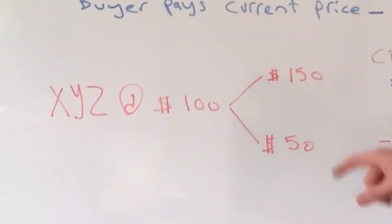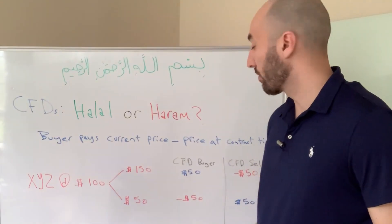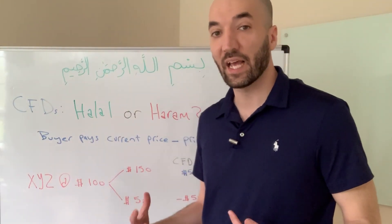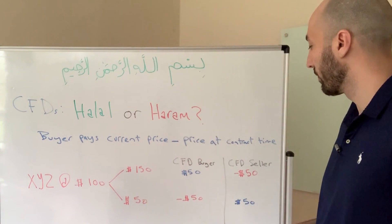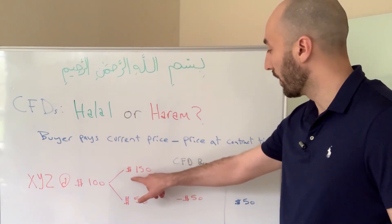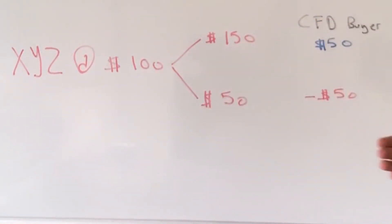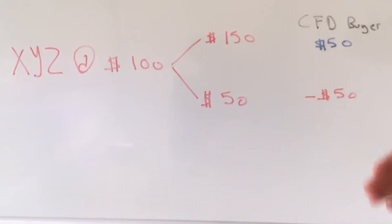The buyer thinks the price is going to go to $150. The seller of this contract thinks the price is going to go to $50. So at the time that the CFD is settled, let's say the price was actually $150. In which case the buyer would pay the price at purchase, which is $100, minus the price at settlement, which is $150 — so $100 minus $150 equals negative $50.